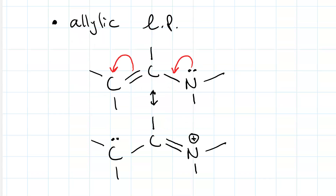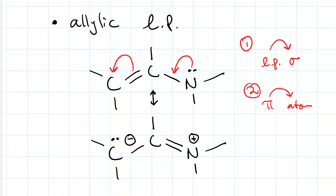Here is our resulting structure. Notice that we've preserved the total charge — we started out with no non-zero formal charges and ended up with an ammonium cation and a carbanion: plus one plus negative one gives you zero. This pattern will always require two curved arrows. The first starts on a lone pair, ends on a sigma bond, and creates a pi bond. The second starts on a pi bond and ends on an atom to make a lone pair.